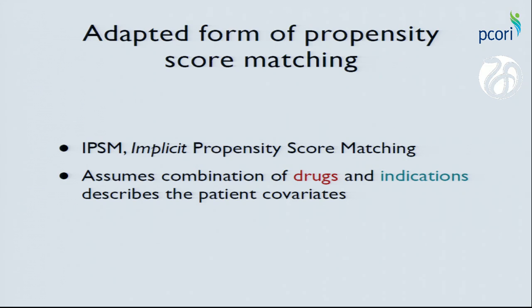So I developed and slightly adapted a new propensity score matching method. We assume we can represent the entire space of confounding covariates by two simple variables: the drugs a patient is prescribed and the indications they are being treated for. A patient's drug list tells you a lot — if they're on birth control you know they're female, if they're on a cholesterol-lowering drug you know they've been exposed to a high-fat diet. We take all of this together to paint a picture of the patient and stand in for the actual important covariates.